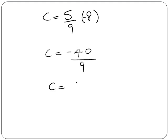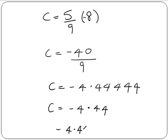So minus 40 divided by 9 gives us minus 4.4444. So we can round this off to minus 4.44. And don't forget that our answer is degrees Celsius. So our answer is minus 4.44 degrees Celsius.